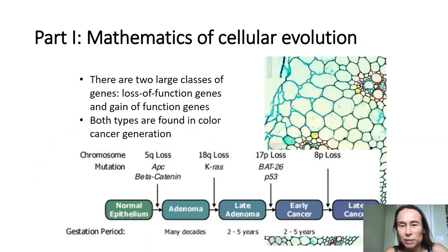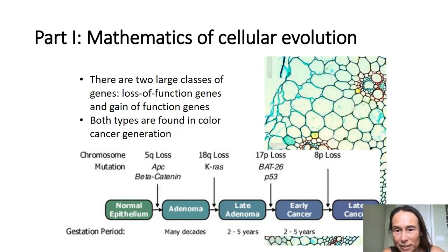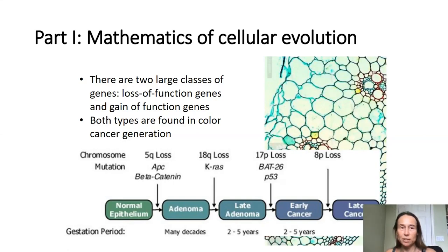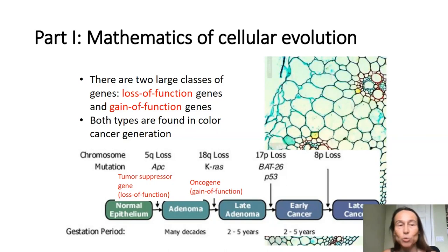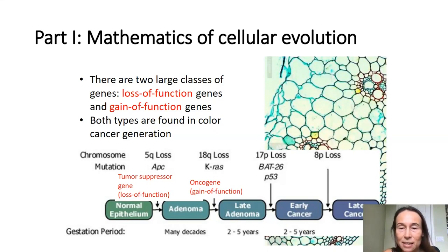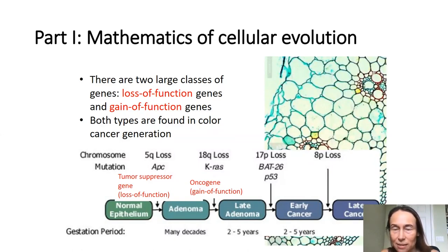I want to start with this very old diagram that shows the progression of colon cancer. We start with normal epithelium and it goes to adenoma and then late adenoma and so on. This process is multistage carcinogenesis and it goes over several mutations that are often present in colon cancer. I want to attract your attention to two different types of mutations: one is called a loss of function mutation, and the other is a gain of function mutation. The first involves a tumor suppressor gene — here the example given is the APC gene — and the gain of function mutation involves an oncogene, in this case KRAS.